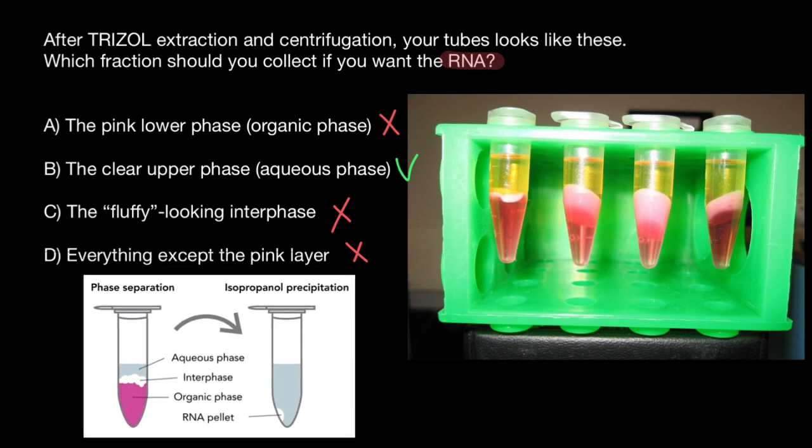And I also want to show you this picture. This picture summarizes what I already said. When we treat with trizol, we should get three phases here. We remove the aqueous phase and put it into another tube. And after centrifugation, we are going to get here a pellet of the concentrated RNA.